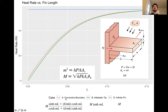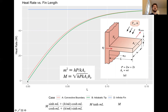You'll probably also notice that the convective boundary and adiabatic tip models track pretty closely. That's why we tell you to just use an adiabatic tip model — over a pretty wide domain, it is a very good approximation of the convective boundary model. Where does that fail? It fails for very, very short fins, right near L = 0. We can think about why the convective boundary model should be different from the adiabatic tip model there — the convective boundary model reports a slightly higher heat rate.